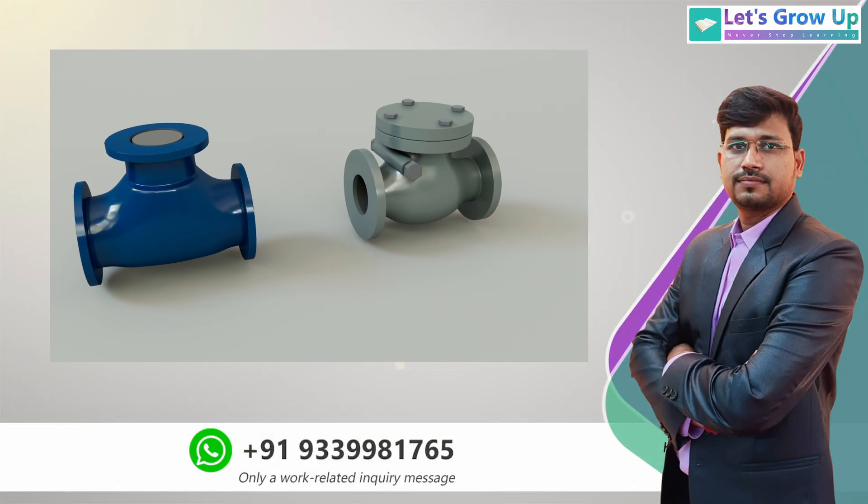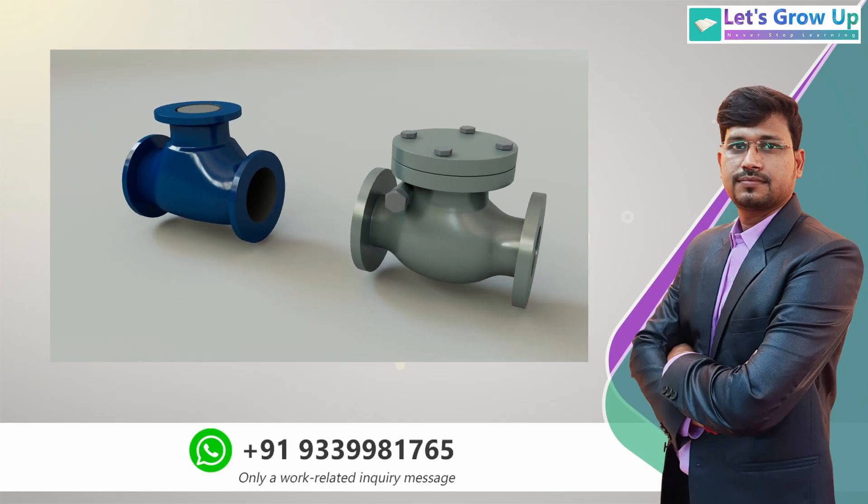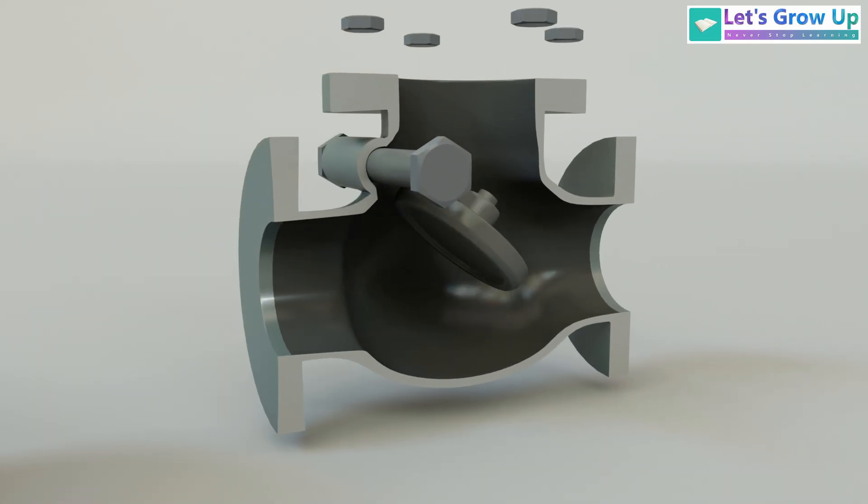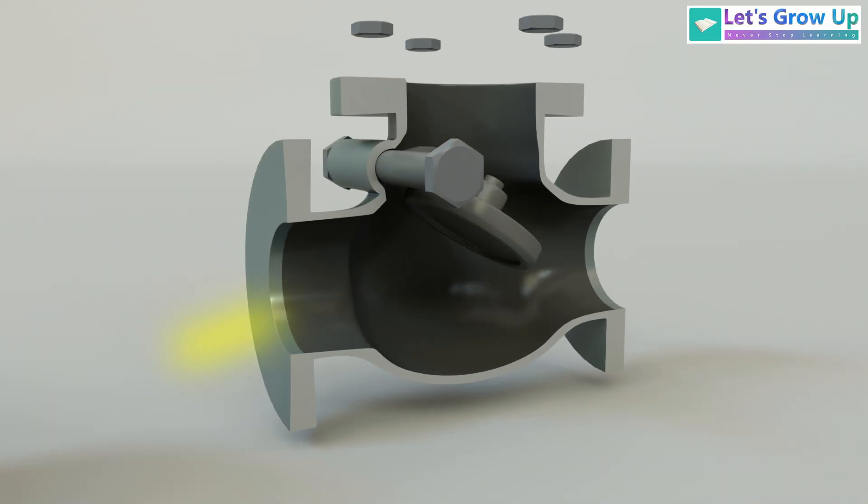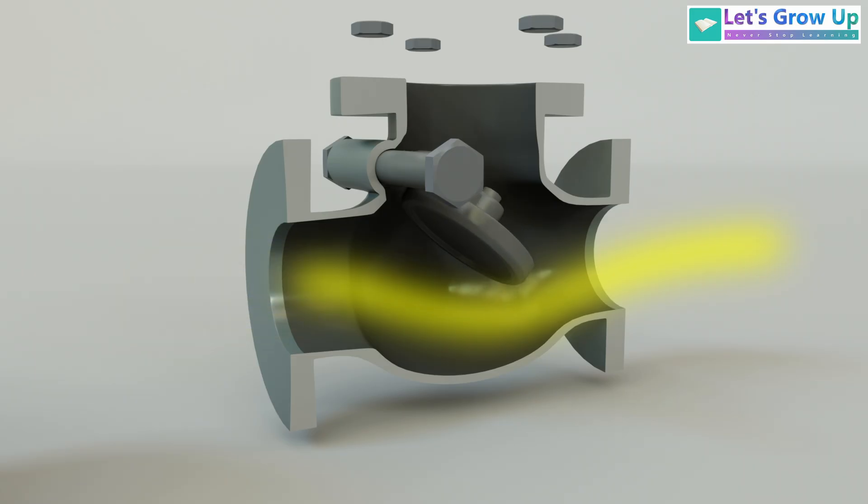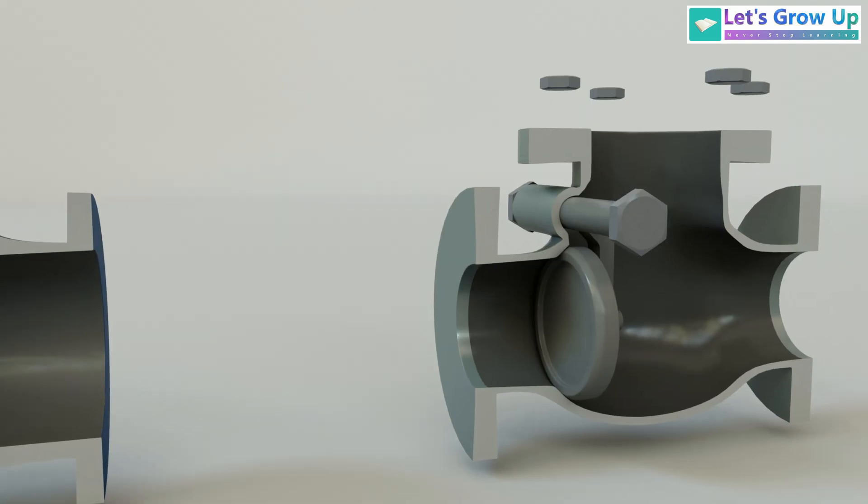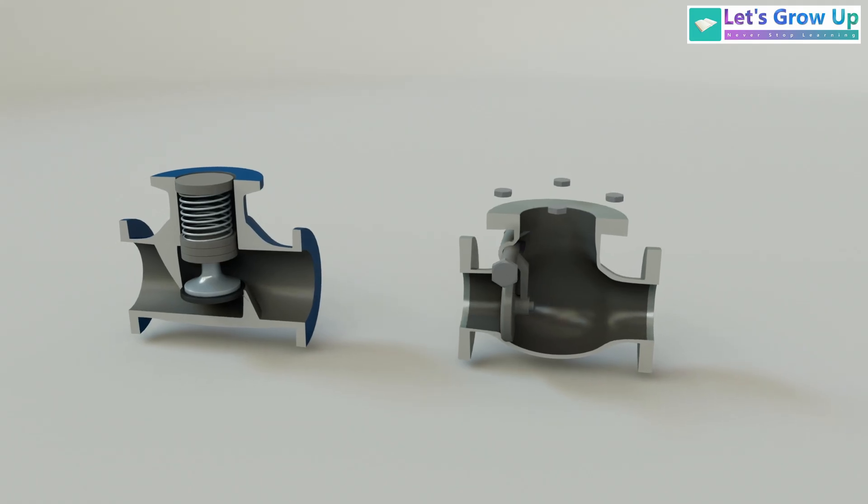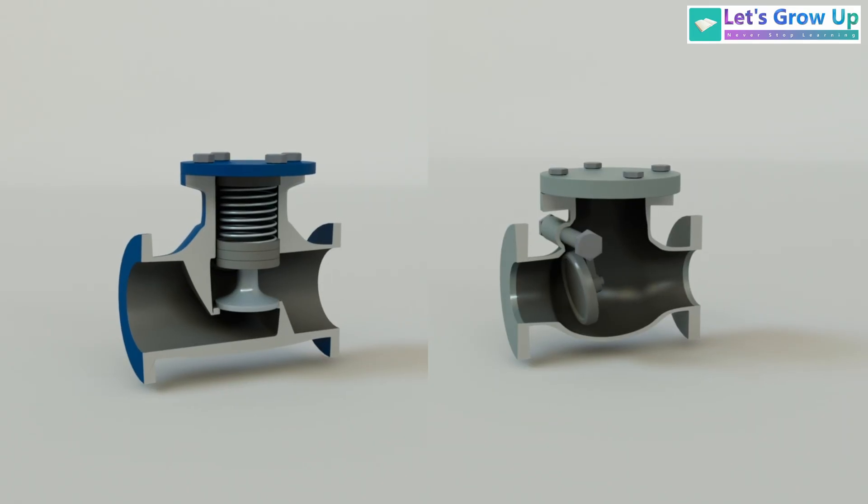Non-return valves, also known as check valves, clack valves, or one-way valves, are ingeniously simple devices. They are designed to allow fluid or gas to flow in only one direction, automatically preventing any backflow. While they may appear to be small components, they are in fact an essential piece of engineering that performs a critical function.